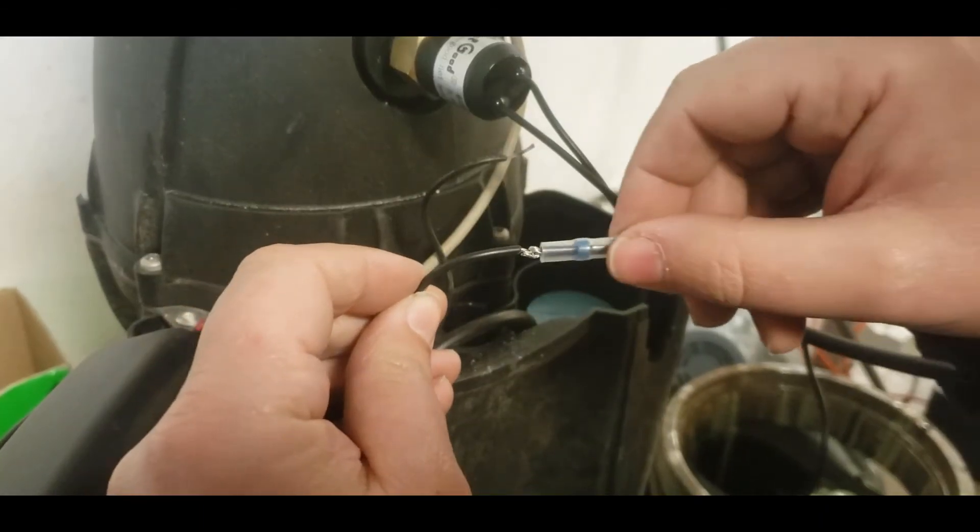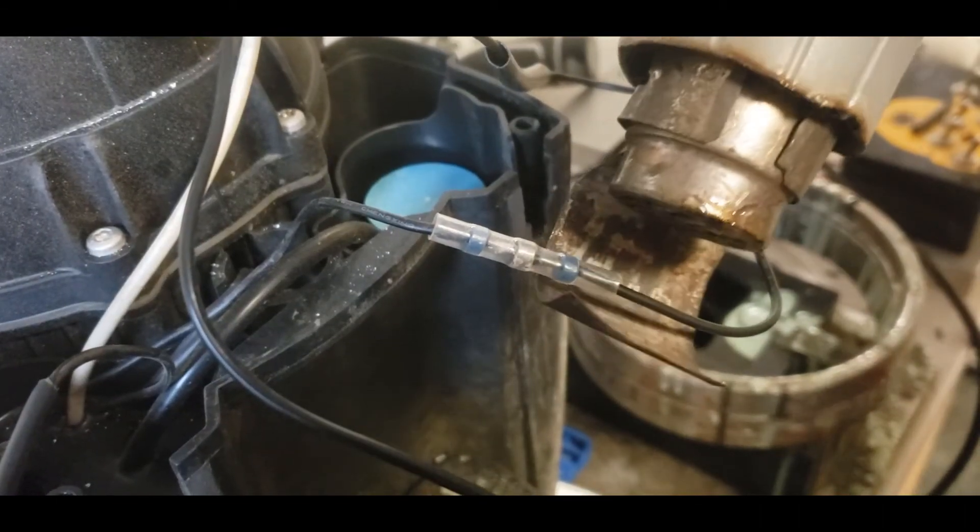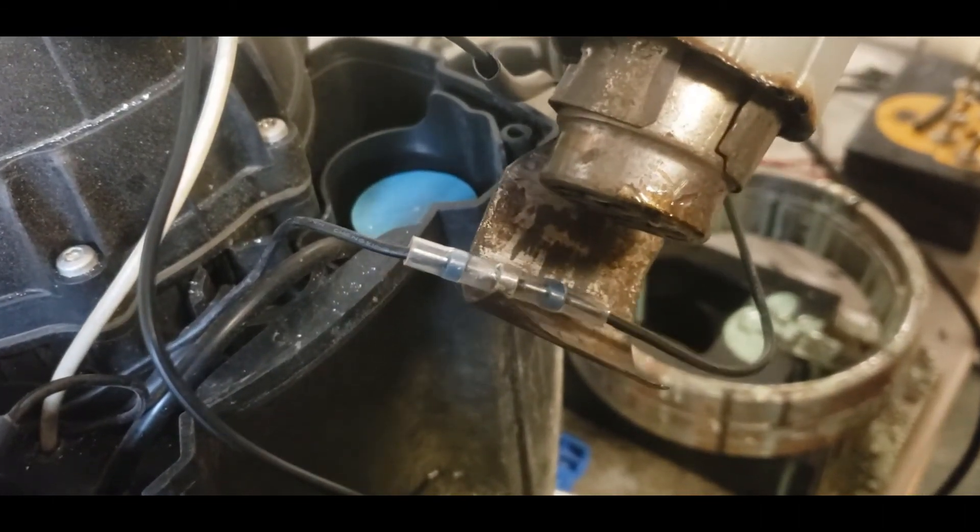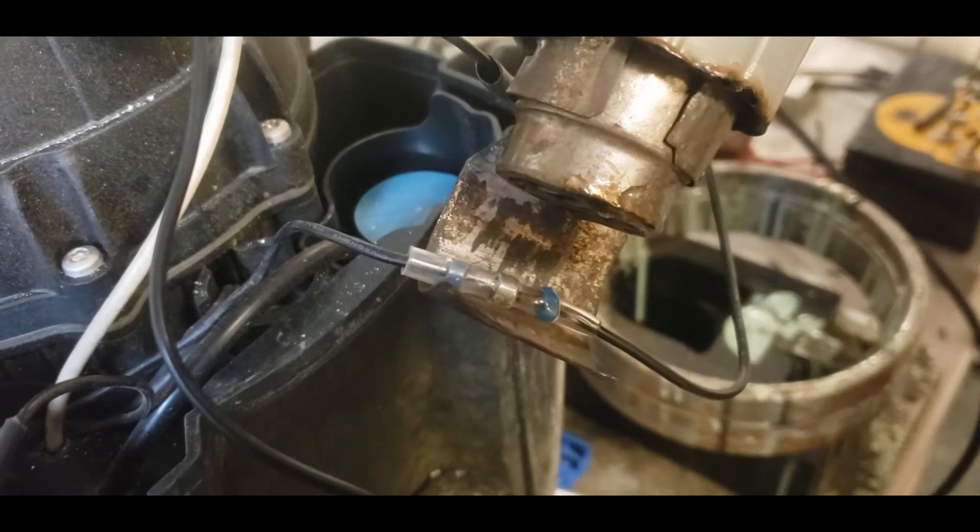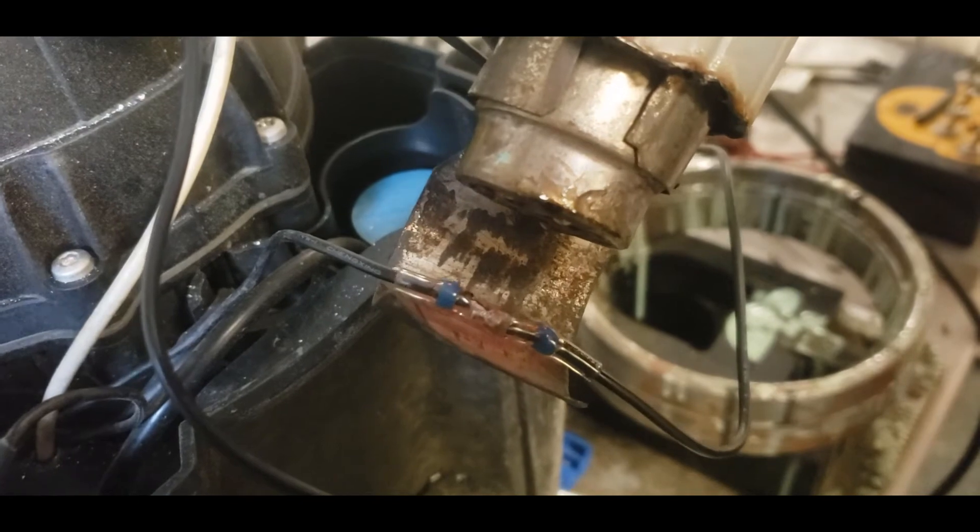Slide the solder sleeve up until the silver ring covers the exposed wires. Heat the ends of the sleeve to make it shrink onto the wire. Heat the center ring until it melts, soldering the two wires together.